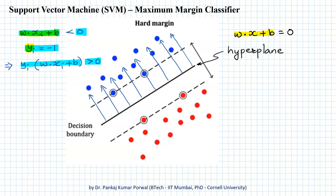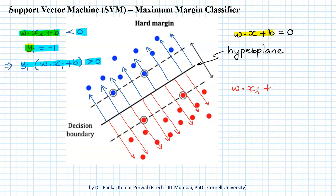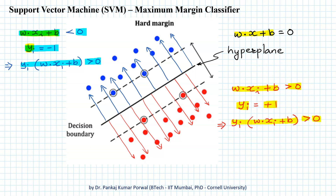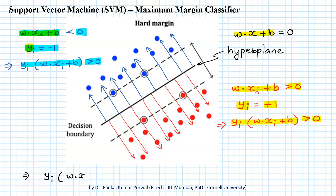Because the value of w dot x plus b is negative on the blue side, it will be positive for the red side. For every point belonging to the red class, the value of w dot xi plus b will be greater than zero. For the red class I assign the class label plus one, so the product yi times (w dot xi plus b) is greater than zero for the red class also, since both terms are positive. By intelligent choice of labels minus one and plus one, we ensure that yi times (w dot xi plus b) is always greater than zero for all data points belonging to both classes.